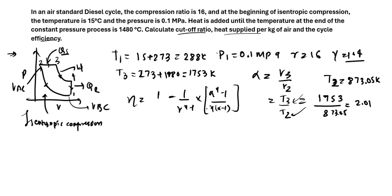So if you put all the values which we have, which is R is 16, gamma is 1.4, so gamma minus 1 will become 0.4, alpha is 2.01. So it is 2.01 to the power of 1.4 minus 1, divided by 1.4 times 2.01 minus 1. So if you calculate this, you will get it as 61.33% as your cycle efficiency.